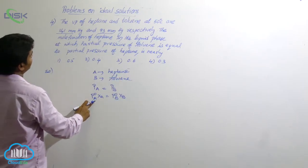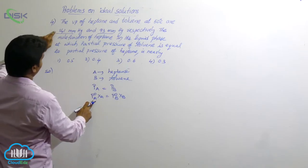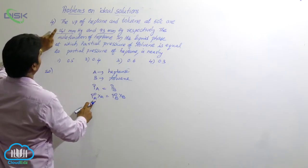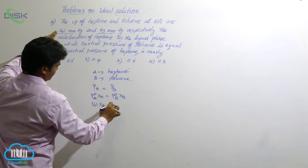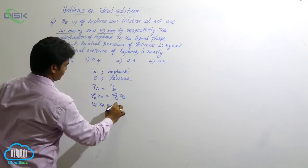What is P naught A then? Already, you can see. P naught A means, it is of heptane, no? 141. 141, XA. Other side, 93, XB.